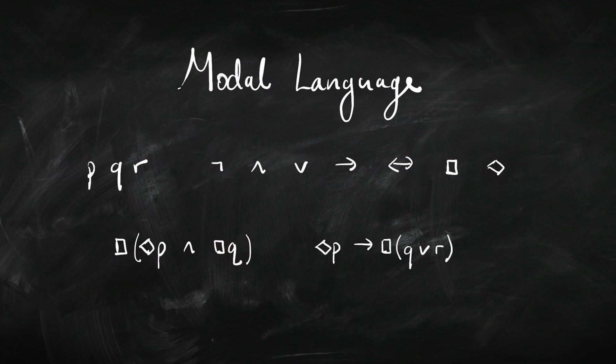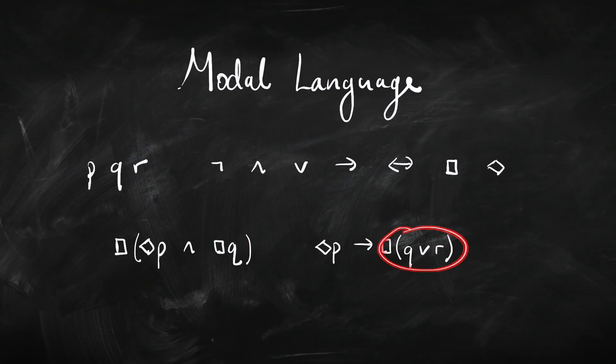Here's another example. We have diamond-P on one side and box-(Q or R) on the other, all put together with an arrow. Looking at the syntax tree: the main connective is the if-then arrow; on the left is a diamond then P; on the right is a box, then 'or,' with Q on the left and R on the right. That's the modal language — pretty straightforward. Let's have a look at how we do semantics for modal logic.